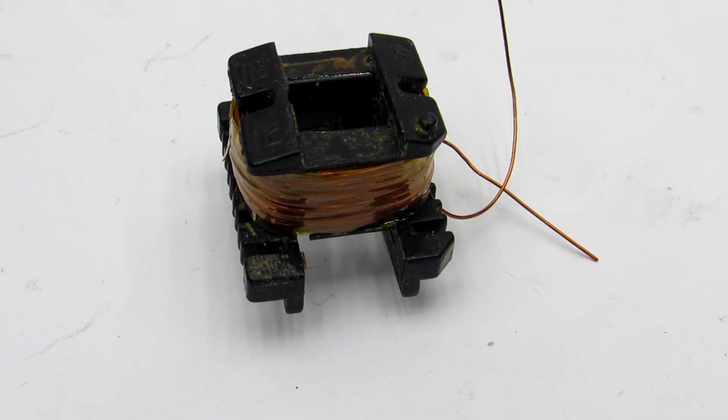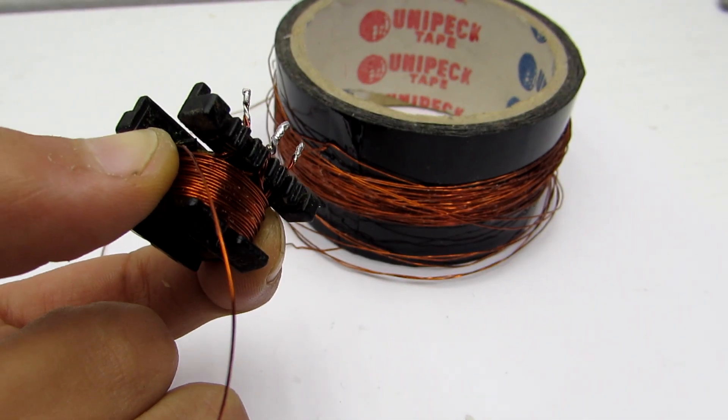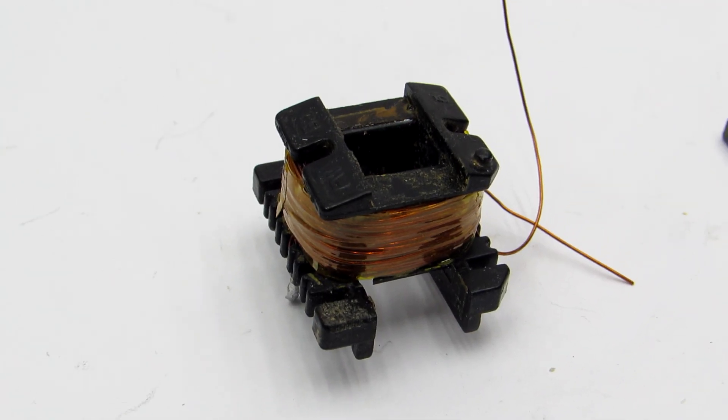The secondary winding is wound by a wire of 0.5 mm and contains 105 turns, and after every 30 turns it also put the insulation.